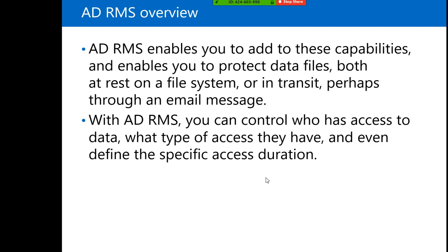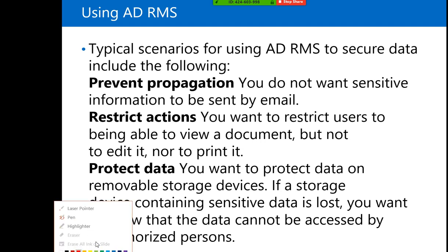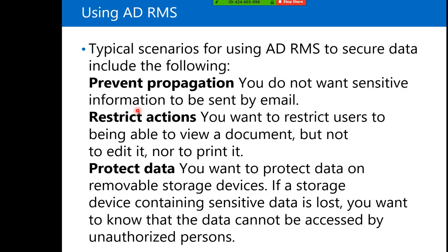Typical scenarios for using ADRMS to secure data include: preventing propagation — you do not want sensitive information sent by email; restricting actions — you want users to view a document but not edit or print it; and protecting data on removable storage devices. If a USB device or external hard disk containing sensitive data is lost, the data cannot be accessed by unauthorized persons.